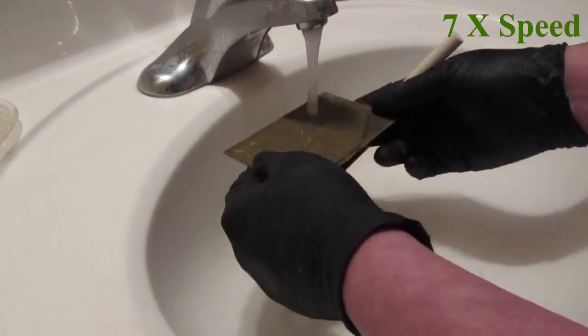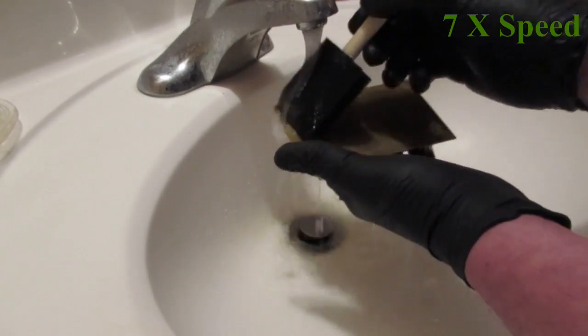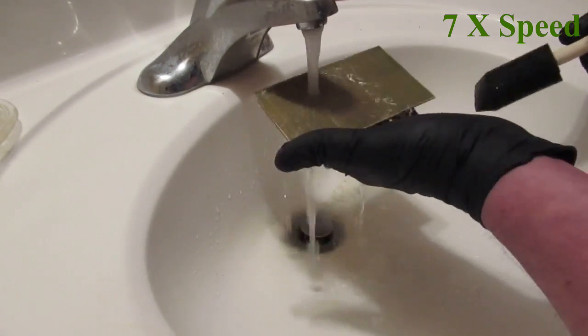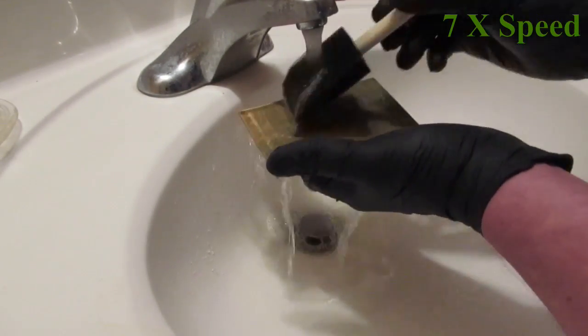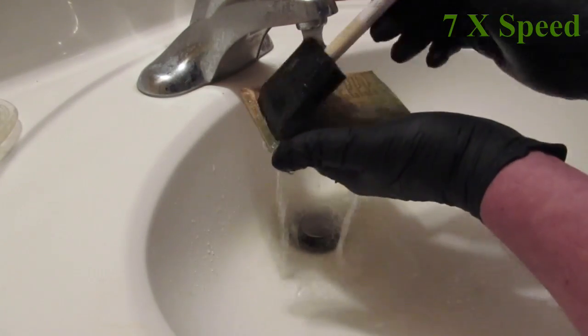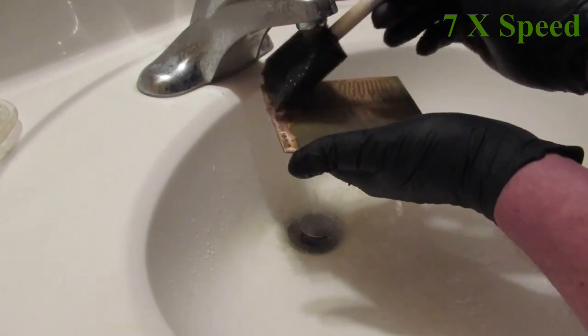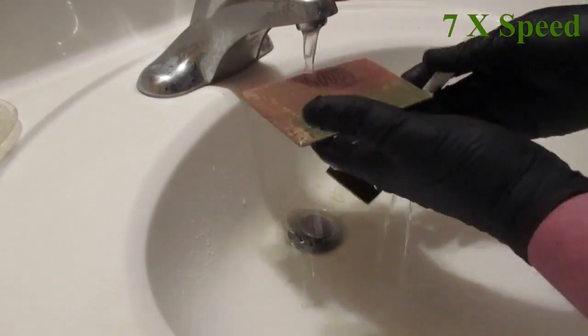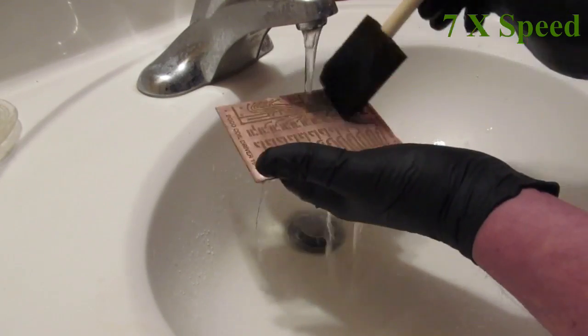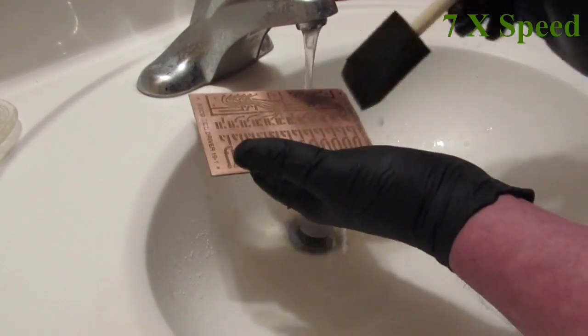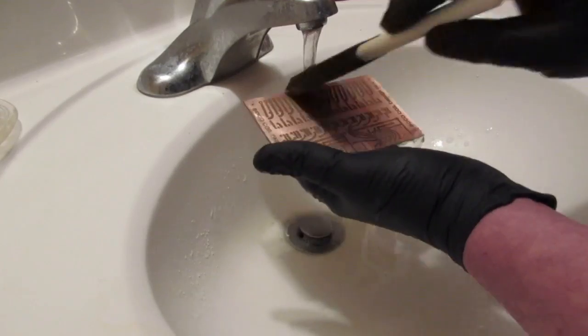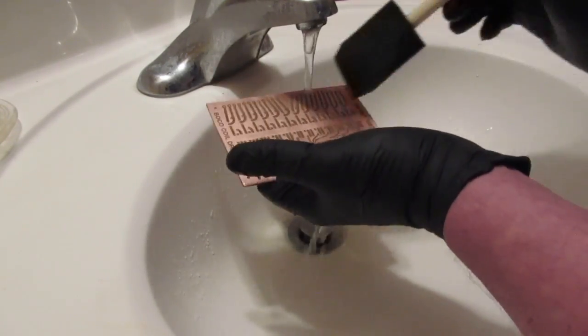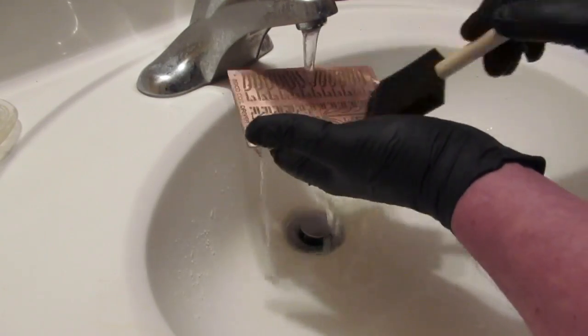Rinse the unexposed emulsion off using lukewarm water. Use a foam brush very lightly to wash the board. Don't be too aggressive with it. The emulsion exposed to the light hardens and becomes a mask to the etchant. Wash the emulsion off well. Any residue left on the board will mask the etchant. It is nice to have the holes etched. The drill bits will track nicely to the proper location if the holes are etched.